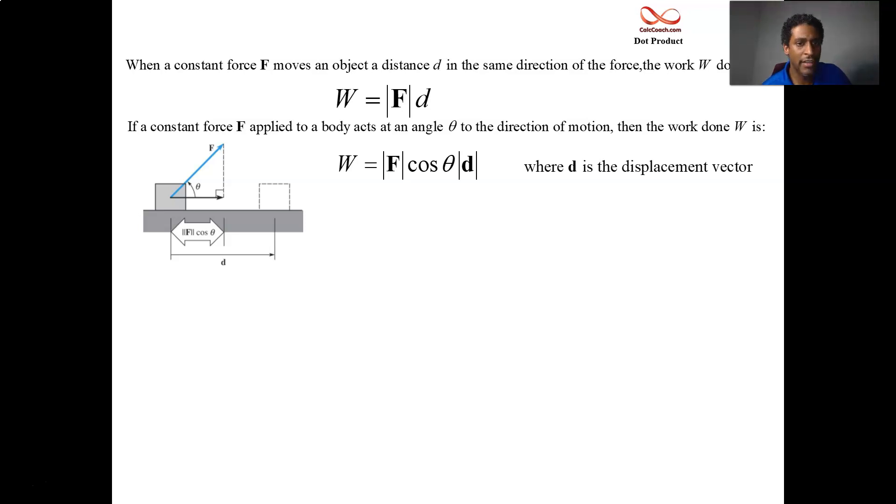D is your displacement vector, and those are the individual parts of the dot product. Remember how we have the dot product between two vectors can be found by finding the product of the magnitudes times the cosine of the angle between them? So work is a dot product between two vectors: the displacement vector and the force vector.